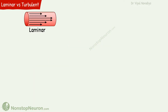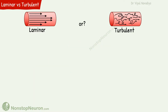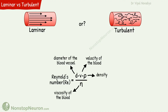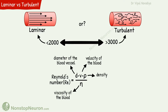We can predict if blood flow would be laminar or turbulent from a parameter called Reynolds number. It's a dimensionless parameter and it's equal to d, v, rho, divided by eta. Here, d is diameter of the blood vessel, v is velocity of the blood, rho is density, and eta is the viscosity of the blood. The higher the Reynolds number, the more the chance of turbulent flow. Below 2000, the flow is usually laminar, and above 3000, it's mostly turbulent.